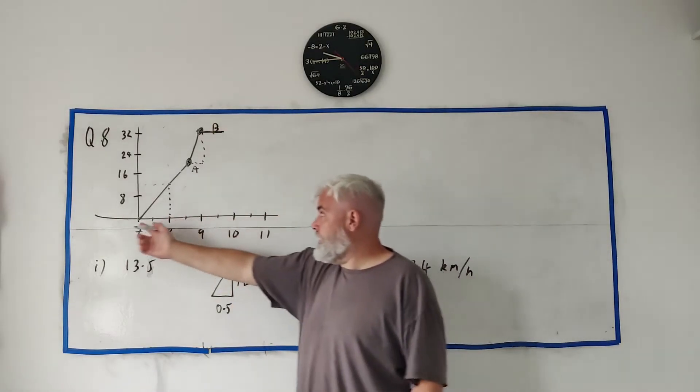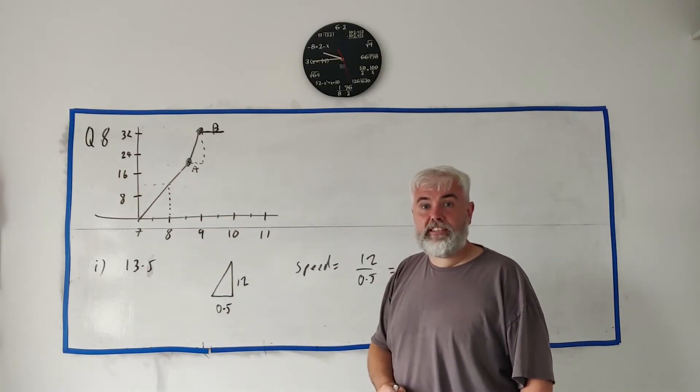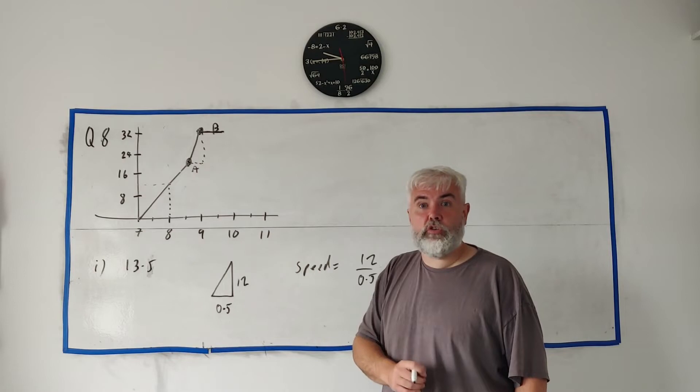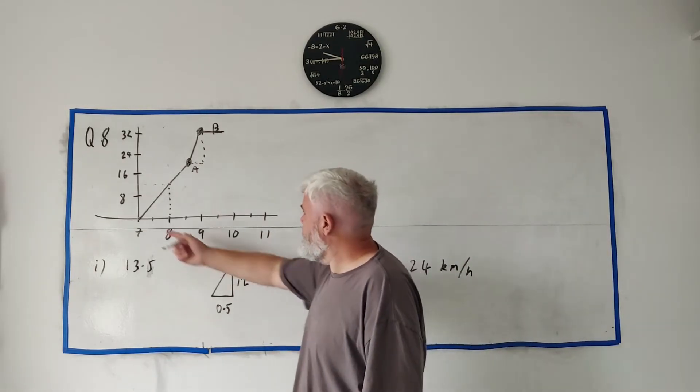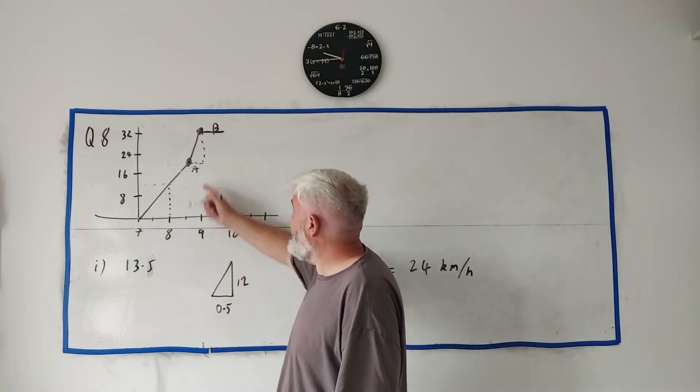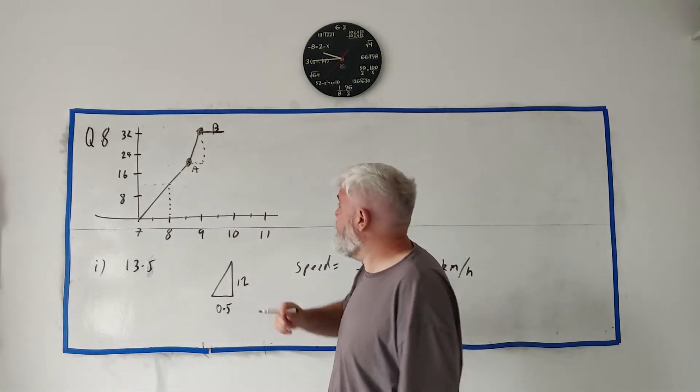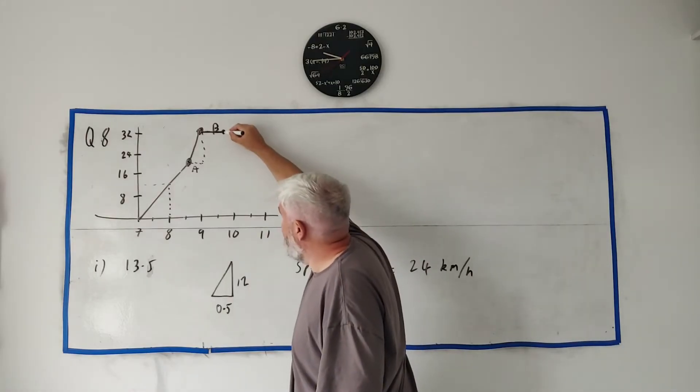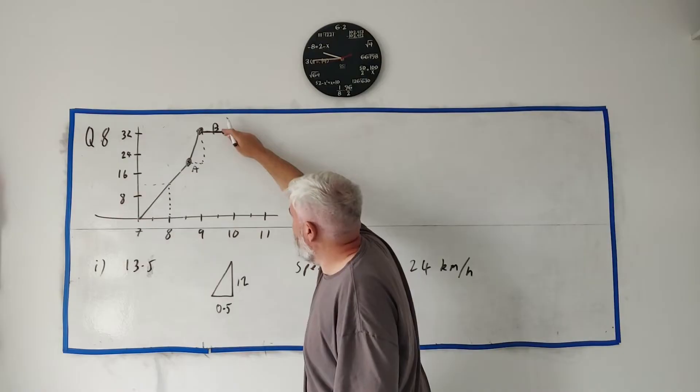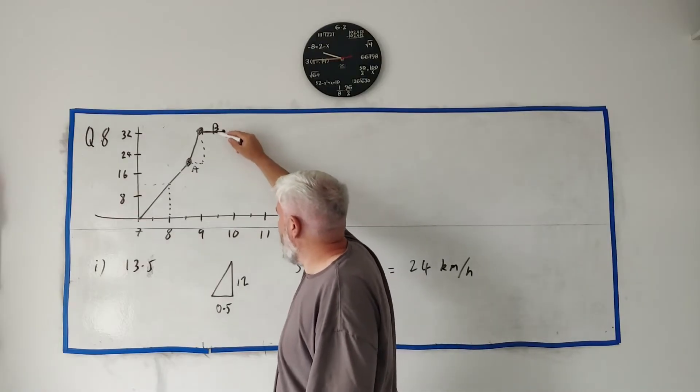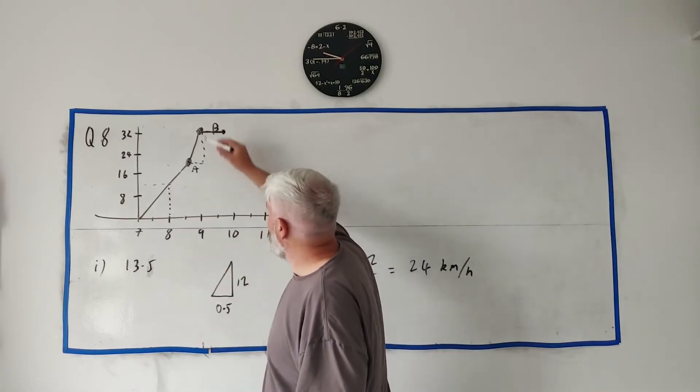That's what standing still looks like in a distance-time graph. He then cycled the 32 kilometers back home at a constant speed for one hour. So it took him two hours to get here, and now he's going to go home in one hour. He's going to start here and he's going to travel all the way back home in one hour. This is half an hour after 9 o'clock, so this is 9:30.